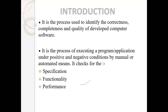It is the process of executing a program or application under positive and negative conditions by manual or automated means. Manual means that people have checked the system. Automated means that automatic tools and software are used for testing. We have two types: manual testing and automated testing, which identifies what the problem is.